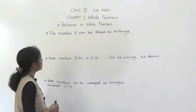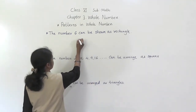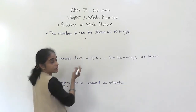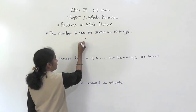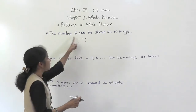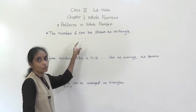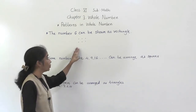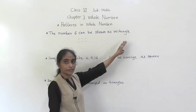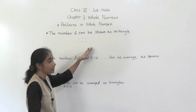The number 6 can be shown as a rectangle. We arrange 3 dots and another 3 dots — 2 rows and 3 columns. So the number 6 can be shown as a rectangle with 2 rows and 3 columns.